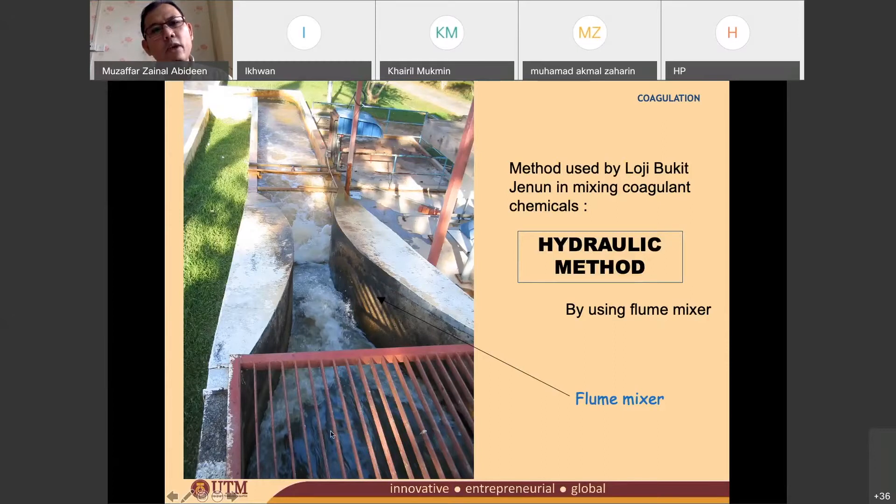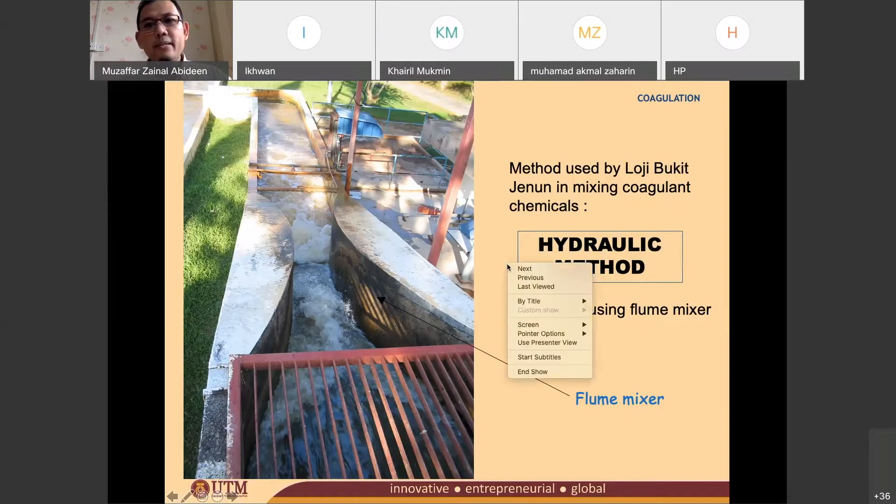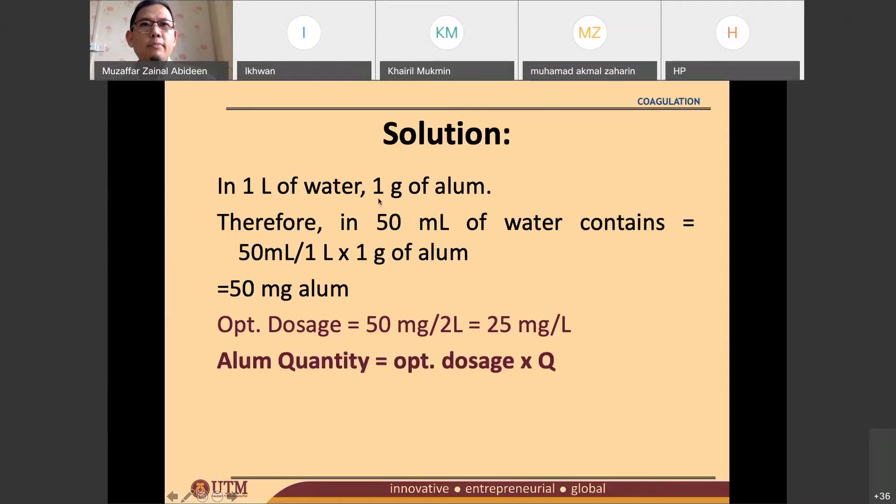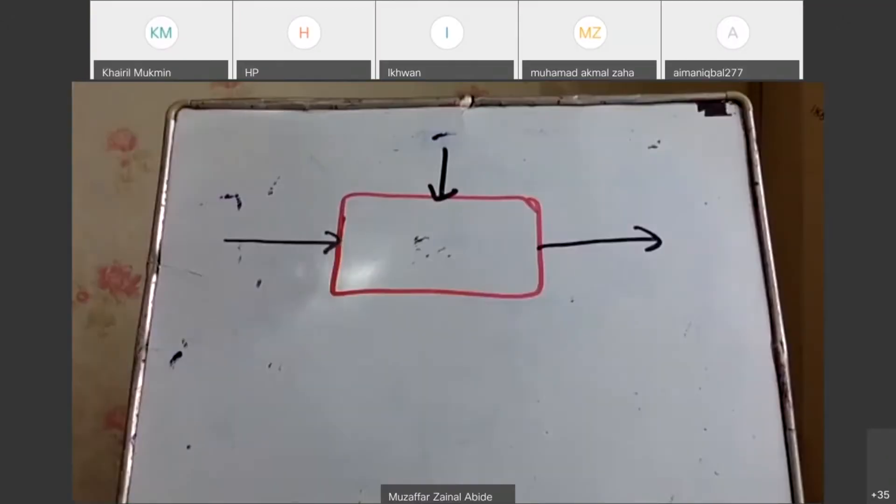So you have the flow rate of the water and you also have the flow rate of the alum solution. These are the flow rates that they are asking you to measure. Is that clear? So that flow rate we need to know. How do we do that? I can stop sharing this slide because I want to show something at my whiteboard.